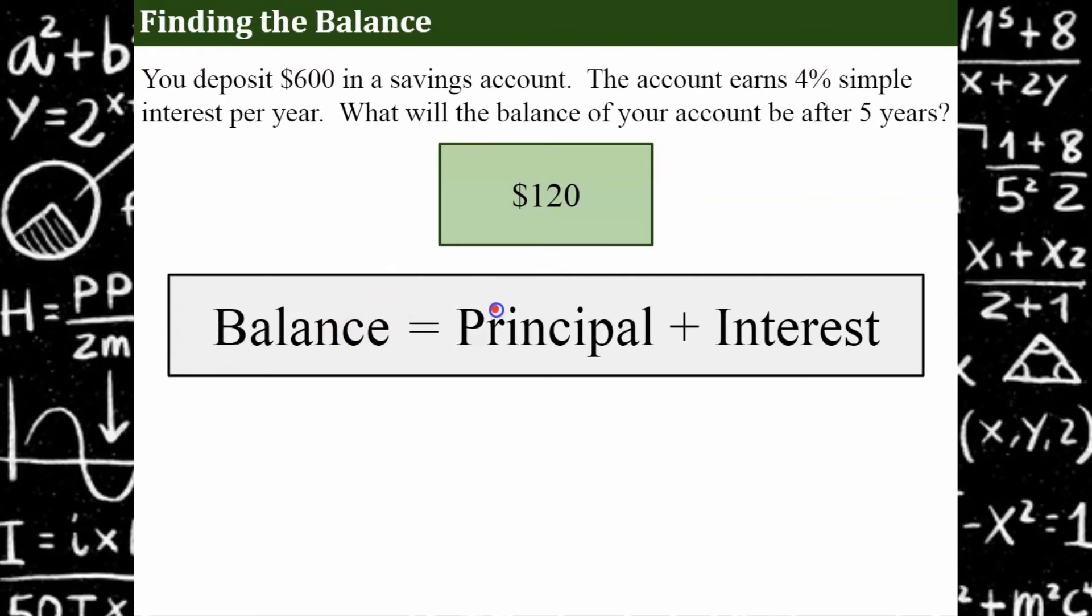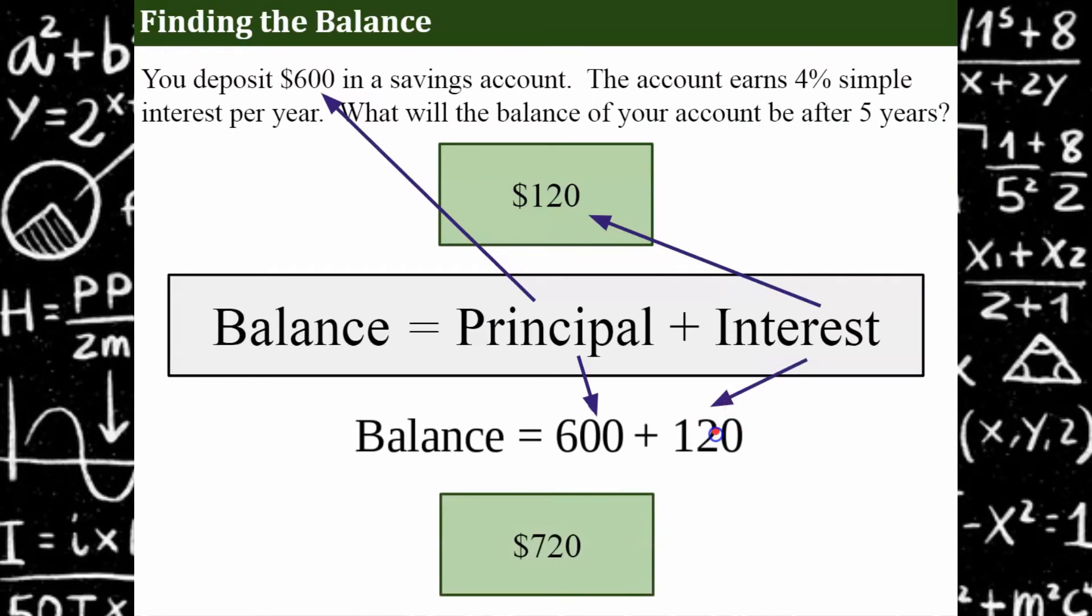Your balance is equal to your principal plus your interest. So remember, you started with $600 in your account. You didn't touch it. You didn't take any money out and you didn't put any money in for five whole years. And over that period of time, you earned $120. So at the end of five years, the bank gave you $120, but you still had your principal. So to find the balance, we're going to take our principal, which is $600, and we're going to add our interest earned. And now we have a balance of $720. So at the beginning of five years, you had $600. You earned $120 interest. And after five years, you now have $720.